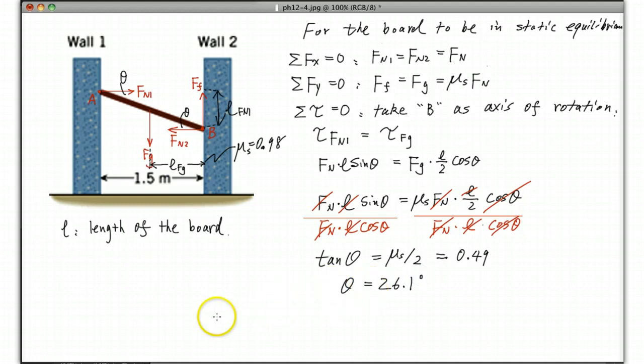And since you got theta, L is easy to find. The length of the board L, because 1.5 divided by L should equal cos theta. And then L is just going to be 1.5 divided by cos theta, and theta is 26.1 degrees. And we do the calculation, so we should get 1.67 meters.